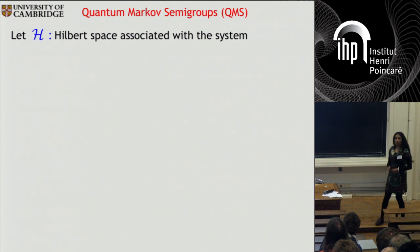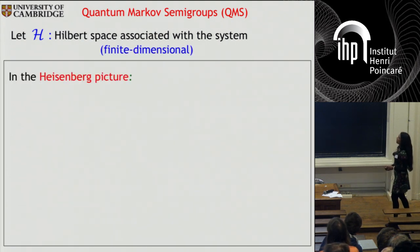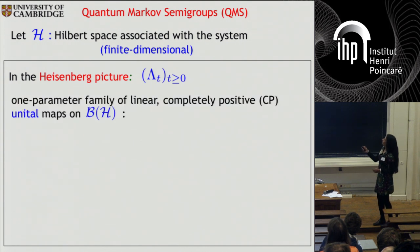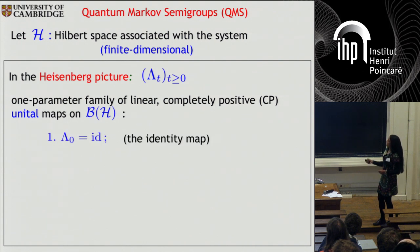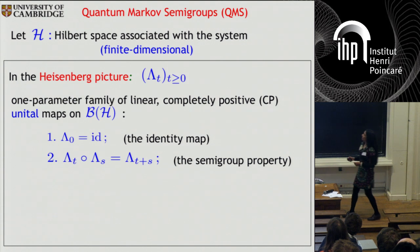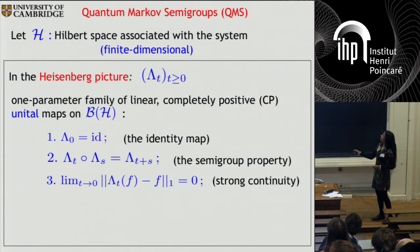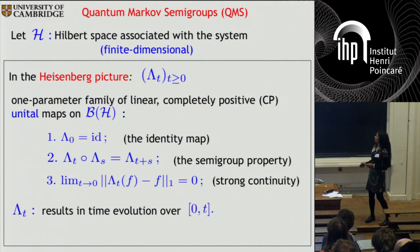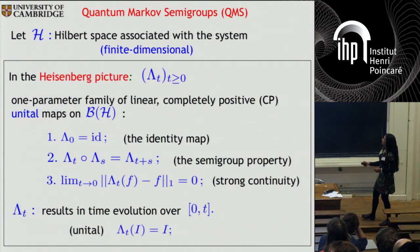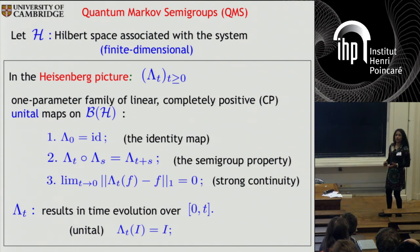All through this talk we consider a quantum system whose underlying Hilbert space is finite dimensional. In the Heisenberg picture the quantum Markov semigroup is given by a one-parameter family of linear completely positive unital maps acting on operators on H. It satisfies the following properties: lambda zero is the identity map, it satisfies a semigroup property, and also strong continuity. Lambda t results in time evolution over the period zero to t and is unital, meaning when it acts on the identity operator you get back the identity. This is the characterization of the quantum Markov semigroup in the Heisenberg picture.